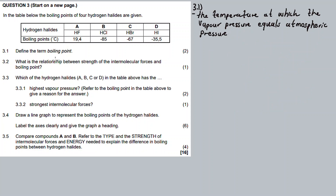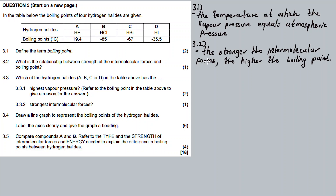Now 3.2: what is the relationship between the strength of the intermolecular forces and boiling point? The stronger the intermolecular forces, the higher the boiling point. We have varying strengths — we have London forces, and we have hydrogen bonds, which are the strongest intermolecular forces.